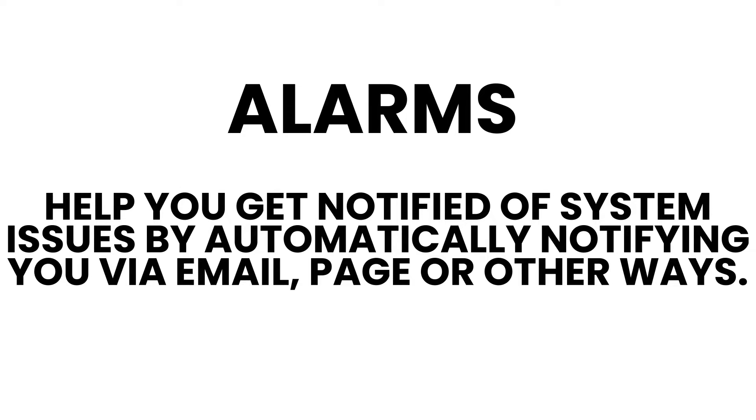So we've identified important metrics, collected them, and put them on a dashboard. But you might be wondering: doesn't this only work if someone's looking at the dashboard in the first place? And you'd be right. To have a truly robust system, you need to add alarms on your metrics. Alarms help you get notified of system issues by automatically notifying you via email, page, or other ways. The idea is that the user creates alarms based on existing application trends. You identify what is normal behavior and create an alarm on a value that would be considered abnormal. If the abnormal scenario occurs, the alarm will fire.